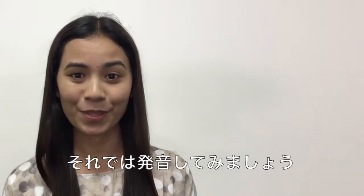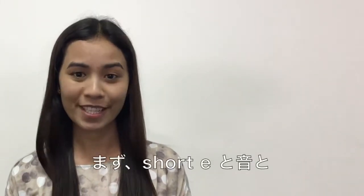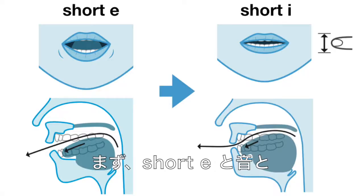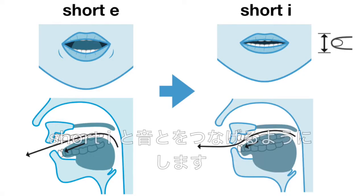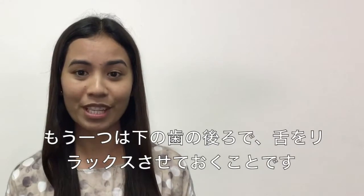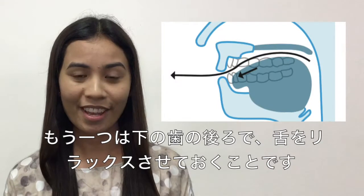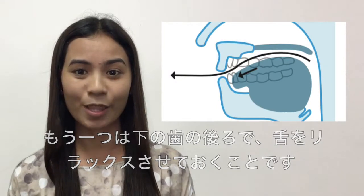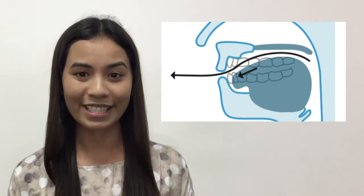Now let's produce the sound. First thing that we need to remember is to connect short E, which is /ɛ/, and short I, which is /ɪ/. Second thing that we need to remember is to relax our tongue at the back of our lower teeth.